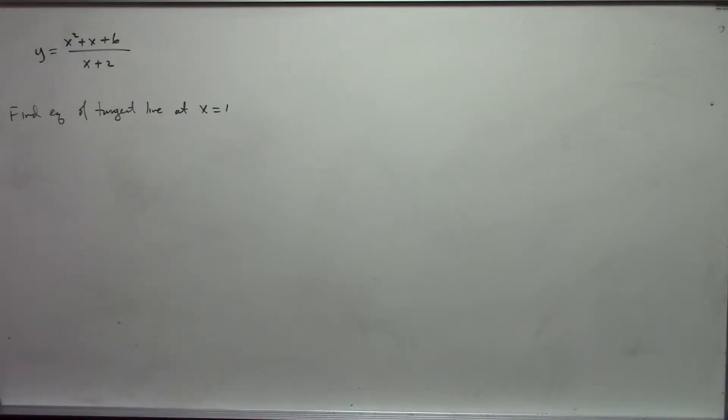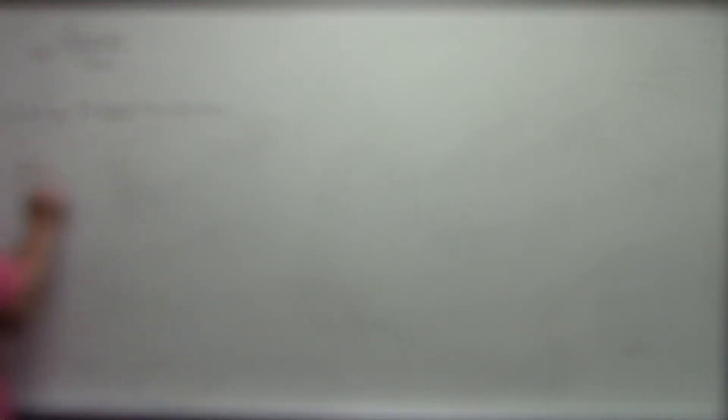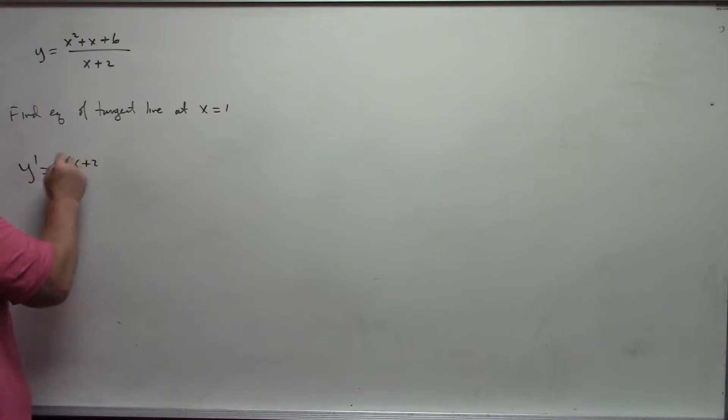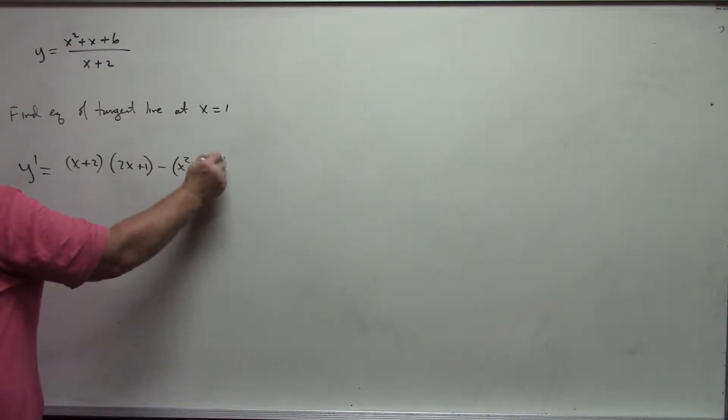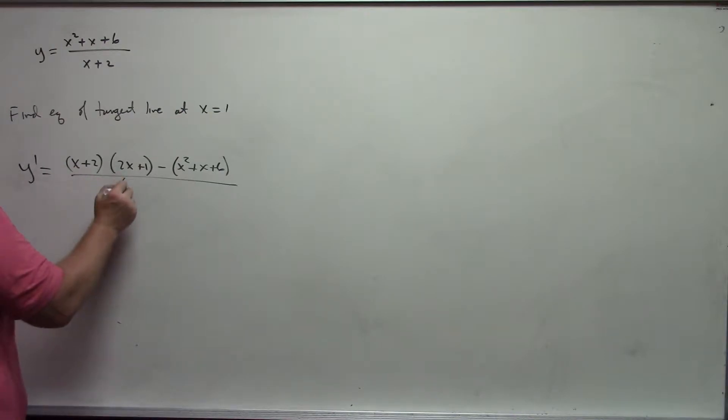For the tangent line, I need the derivative. My derivative: bottom times the derivative of the top, which is 2x plus 1, minus the top times the derivative of the bottom, which is 1, over the bottom squared.